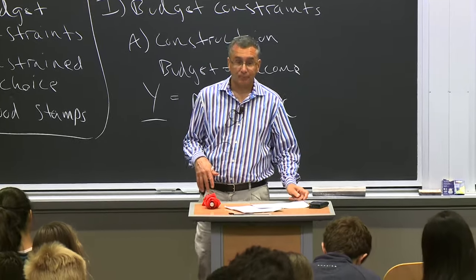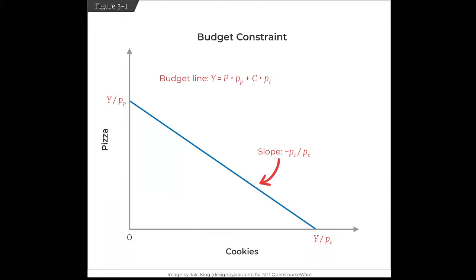I find this easier to see graphically. Figure 3-1 shows a budget constraint. The x-axis is your income divided by the price of cookies — if you devote all your income to cookies, you get Y over P_C. If your income is $100 and cookies are $10, you can only have 10 cookies. The y-intercept is income divided by the price of pizza. The slope is the negative price ratio, minus P_C over P_P.